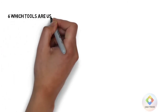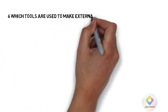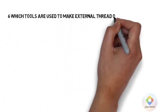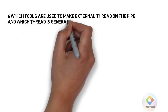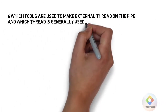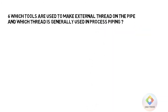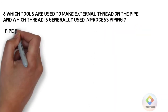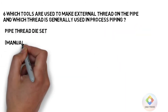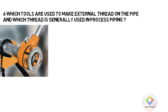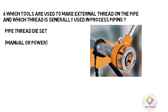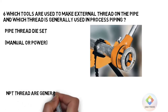Q6: Which tools are used to make external threads on the pipe, and which thread is generally used in process piping? Pipe thread die set, manual or power. NPT thread is generally used.